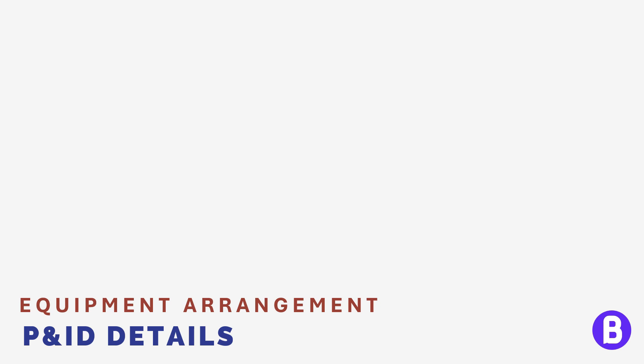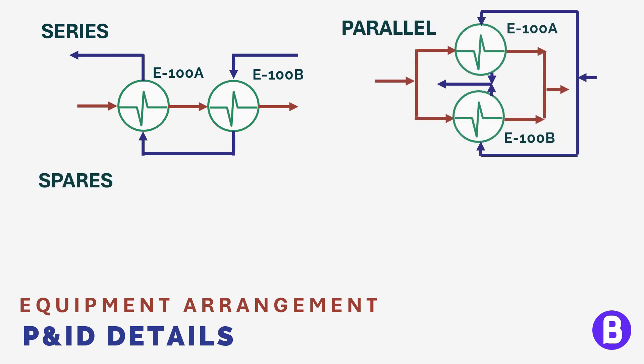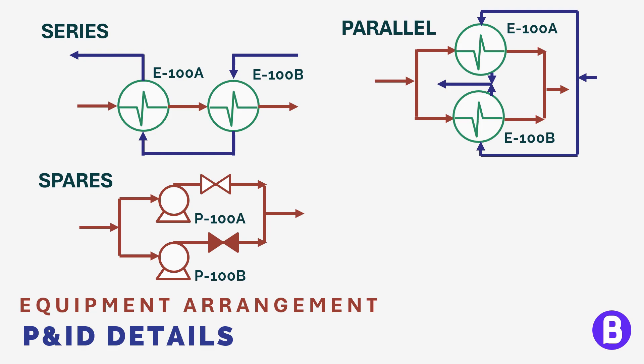While talking about the data to be shown for equipment in the P&ID, we should show the equipment arrangement. In the PFD, showing only one piece of equipment and including all tagging is common. For example, if this is a pump having a spare, the PFD shall show one pump with the tags A and B. In the P&ID, the case is different — we should show the detailed arrangement, which means how many pieces of equipment we have, and whether they are connected in series or in parallel.